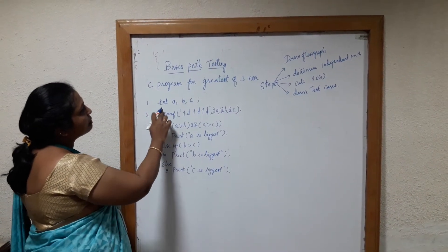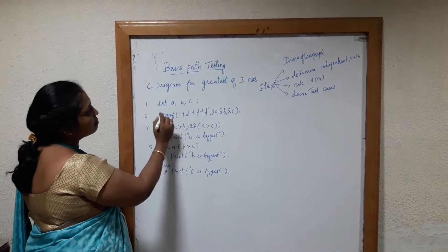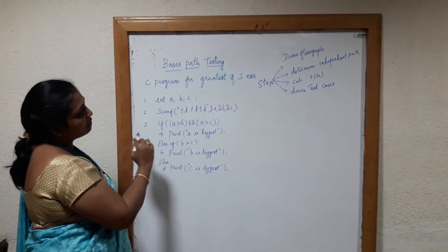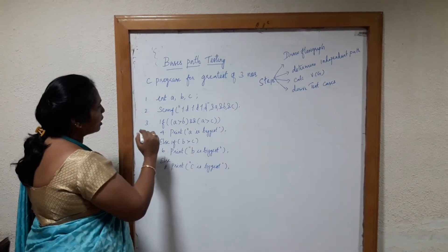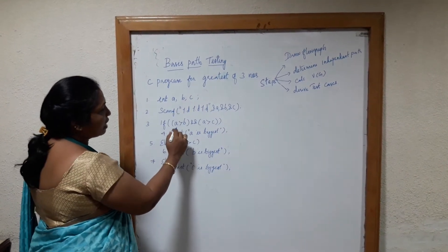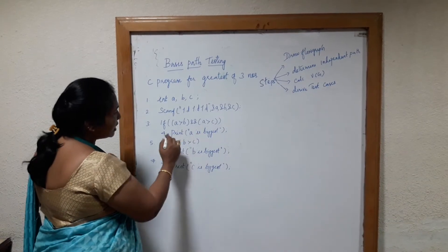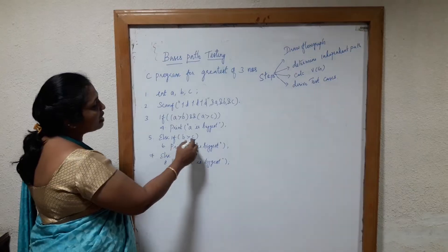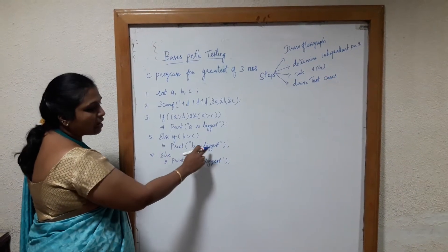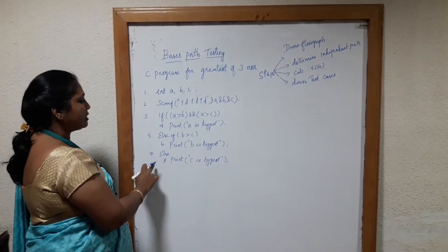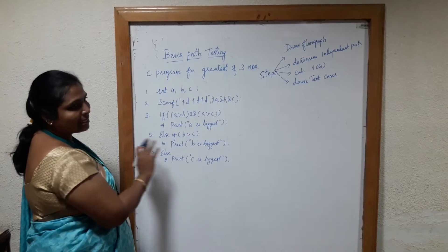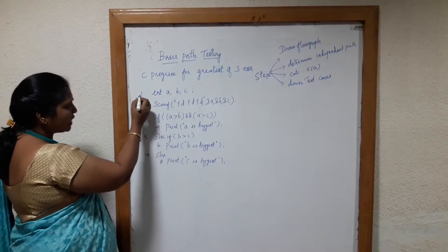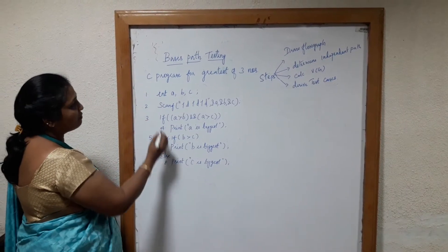For this scenario we need 3 variables. I have declared the 3 variables A, B, and C. The next line reads the 3 variables A, B, C. The logic is: if A is greater than B and C, then A is biggest. Else if B is greater than C, then B is biggest. Else C is biggest. This is the scenario — first you have to write the logic, then you have to number each and every line.